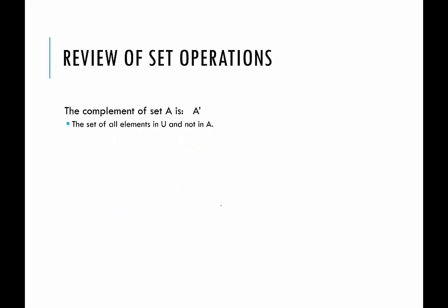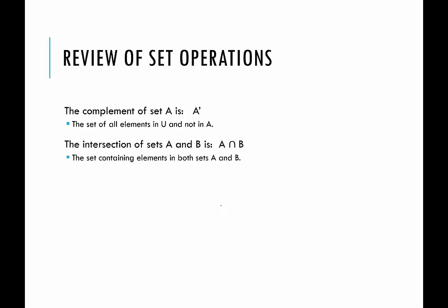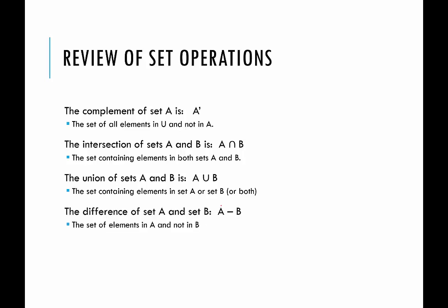Just to recap the operations we talked about: the complement of set A, A complement, is the set of all elements in the universe that are not in A. The intersection of sets A and B, A intersect B, is the set of elements that are in both sets A and B. The union, A union B, is the set of elements in either set A or set B or both. And the difference of set A and set B is the set of elements that are in A and not in set B. Thank you.